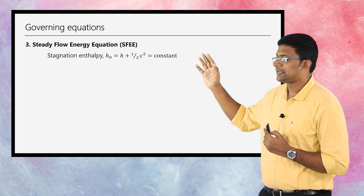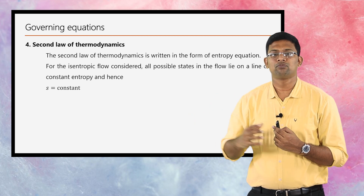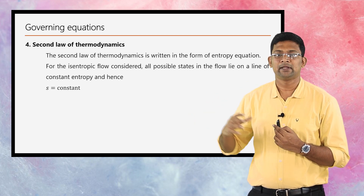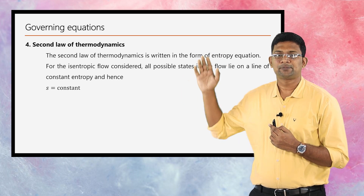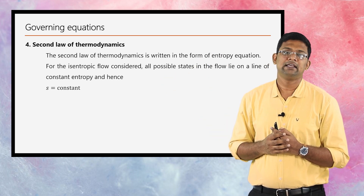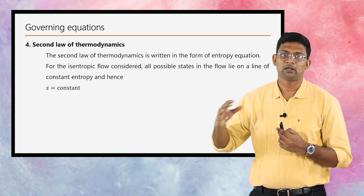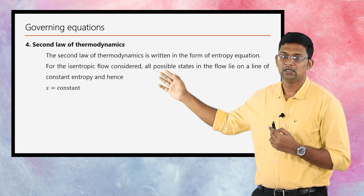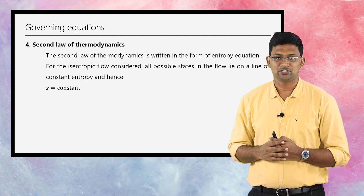Coming to the next governing equation derived from the second law of thermodynamics: the second law can be written in the form of an entropy equation. For an isentropic process, dS = 0 — that is, the change in entropy is zero — or in other words, entropy S is a constant. This is the fourth governing equation.